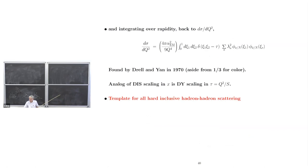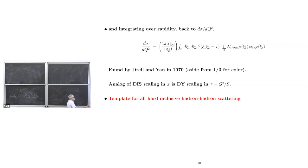This was found by Drell and Yan in 1970 — aside from the 1/3 color factor, because they were working in a model theory, not QCD. It's the analog of DIS scaling. The cross-section is basically only a function of τ = q²/s except for an overall 1/q⁴ factor. This is the template for all hard inclusive hadron-hadron scatterings, and its justification in terms of universal distributions is the flat and frozen picture for hadrons colliding at high energies.